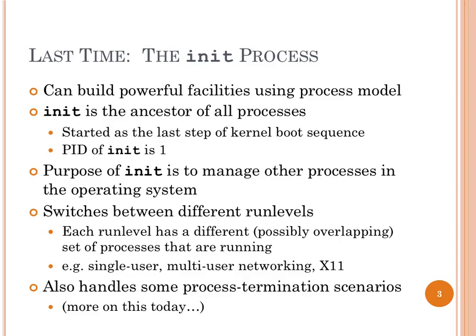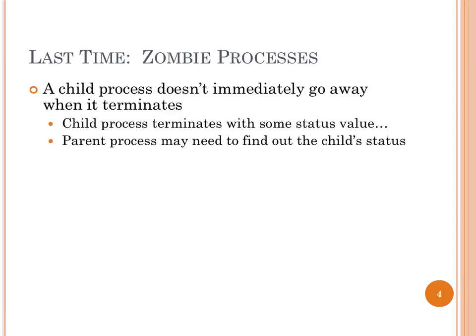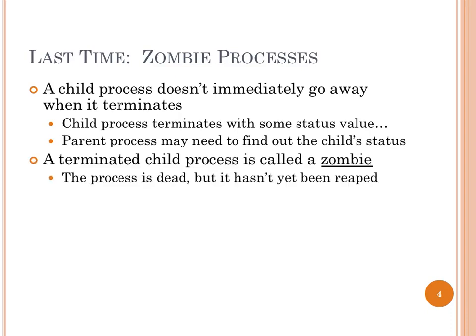Every process has to have a parent, and that parent has to be a running process. So what happens if you get forked off by a parent that then terminates? Well, init — process ID 1 — plays a role in handling that circumstance. When a process terminates, it doesn't go away right away because somebody may want to know what happened. The only thing that hangs around when a process terminates is the termination status. The OS reclaims all resources — address space, stack, open files — but keeps a little bit of detail about why the child terminated. We call it a zombie.